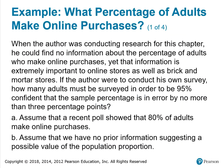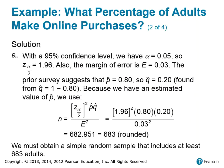Here's an example. When the author was conducting research for this chapter, he could find no information about the percentage of adults who make online purchases — yet that information is extremely important to online stores as well as brick-and-mortar stores. How many adults must be surveyed to be 95% confident that the sample percentage is in error by no more than three percentage points? For Part A, with a 95% confidence level, alpha is 0.05 and the critical value is 1.96.